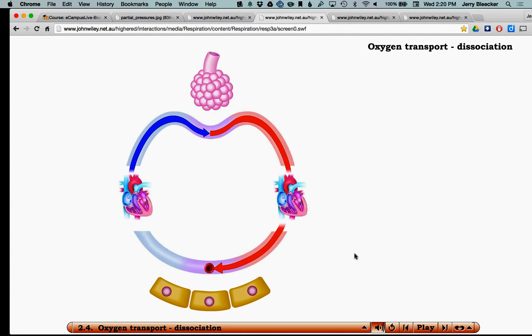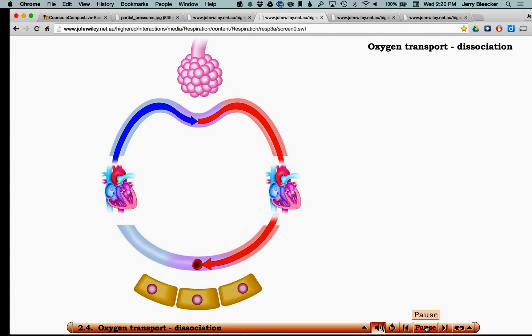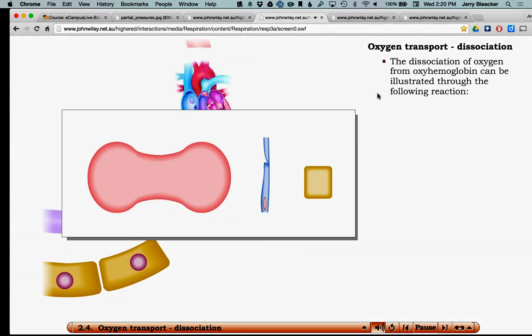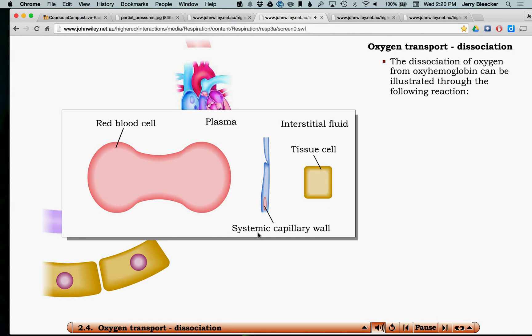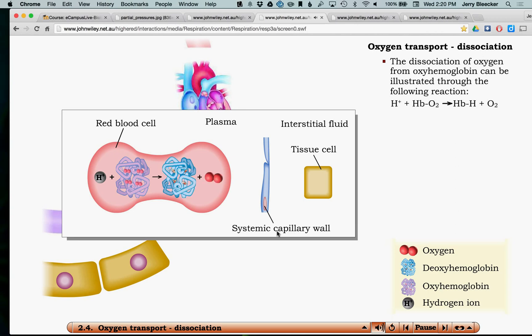Now what I want to look at is the dissociation. So when oxygen comes down to the tissues, goes past a systemic capillary wall, for example you get near let's say your muscles and we're coming near a muscle cell here, what's going to happen is the oxyhemoglobin is going to give up its oxygen.